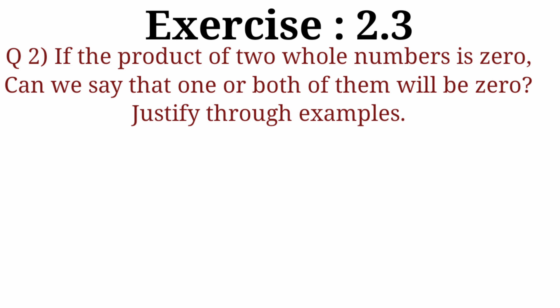So that covers our first question. Now coming to question number two: if the product of two whole numbers is zero, can we say that one or both of them will be zero? Justify it through an example. In this question, as you know, product means when we multiply any two numbers, the answer we get is called the product.